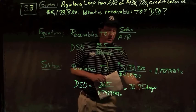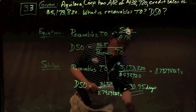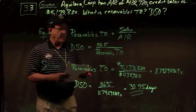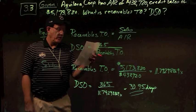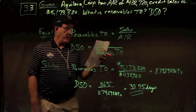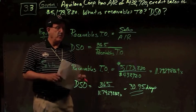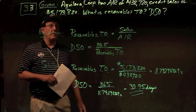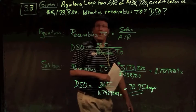The answer is then that it takes the company, Aguilera Corporation, 30.95 days to collect their receivables from their customers. There's your answer to problem number three.